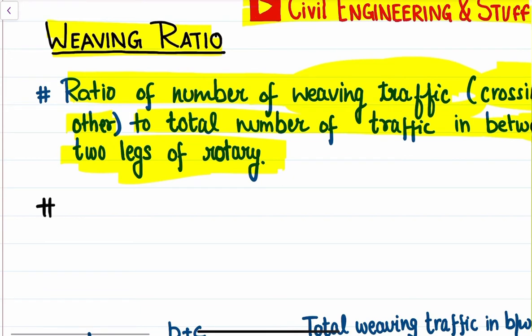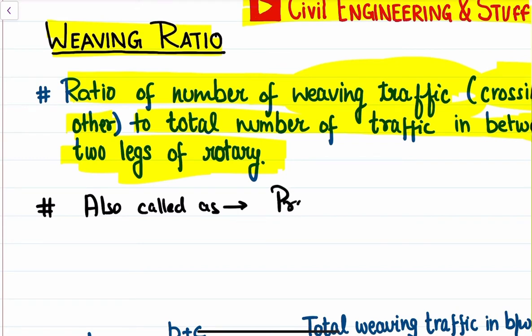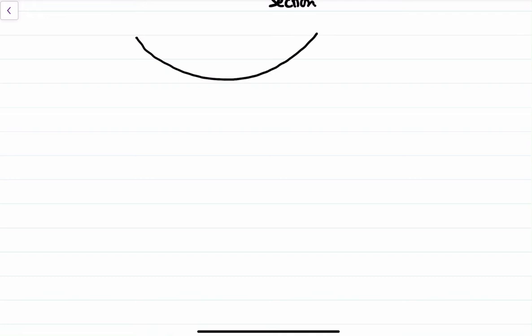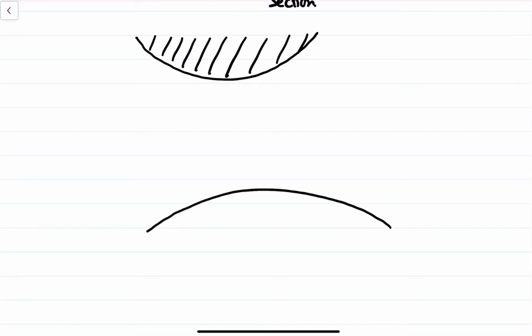The other name of weaving ratio is proportion of weaving section. So if we want to represent this in terms of a formula, we will take any two legs of the rotary — in this case, we are taking leg 2 and leg 3.